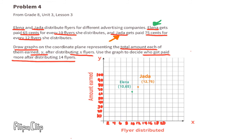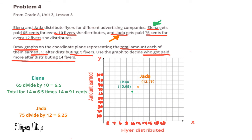We can figure out how much that is per flyer. Elena got paid $0.65 for delivering 10 flyers: 65 divided by 10 is 6.5 cents per flyer. 6.5 times 14 equals 91 cents, so Elena gets paid $0.91 for delivering 14 flyers. Jada gets paid $0.75 for delivering 12 flyers: 75 divided by 12 equals 6.25 cents per flyer. 6.25 times 14 equals 87.5 cents, so Jada gets paid $0.875 for delivering 14 flyers. Since $0.91 is greater than $0.875, Elena gets paid more for delivering 14 flyers.